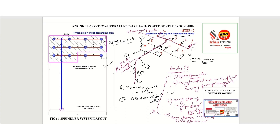We have one riser nipple here, one riser nipple here, and one more riser nipple here. At this intersection point, since this is the first path or primary path, we will denote it as RN1 — riser nipple one. And this one will be RN2, and this point will be RN3. Now for the cross main, we need to put the nodding for this particular path as well. So here we will put cross main one, this will be cross main two, and this will be cross main three.